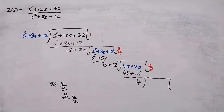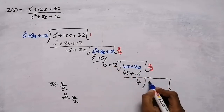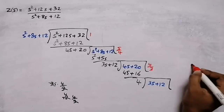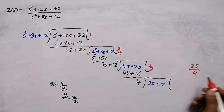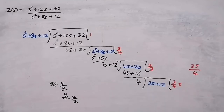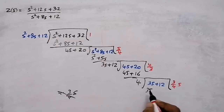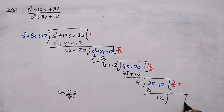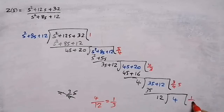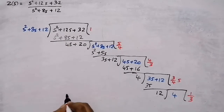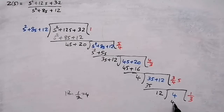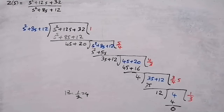Continue long division. New divisor is 3s + 12. First term: 3s divided by 4 gives (3/4)s. Multiplying: 4 × (3/4)s = 3s. Subtracting: 3s − 3s = 0, remainder is 12. Dividing again: 4 divided by 12 gives 1/3. Multiplying: 12 × (1/3) = 4. Subtracting: 4 − 4 = 0. Long division is complete.